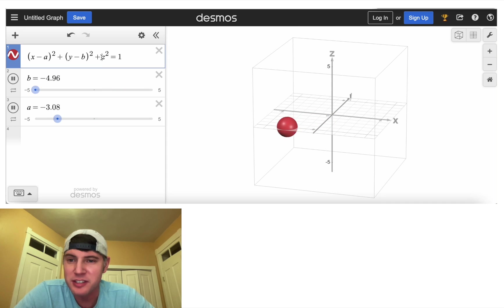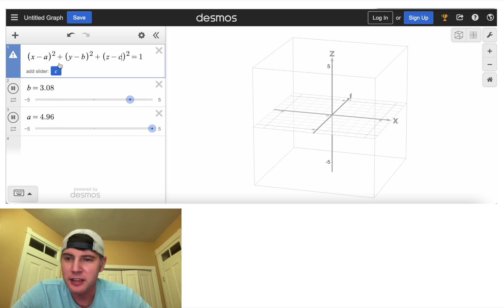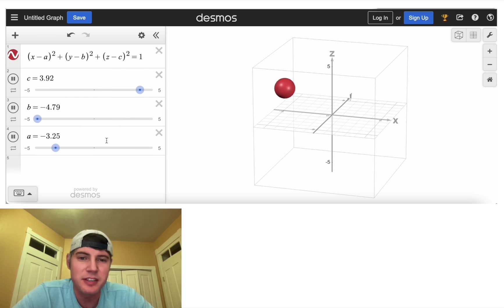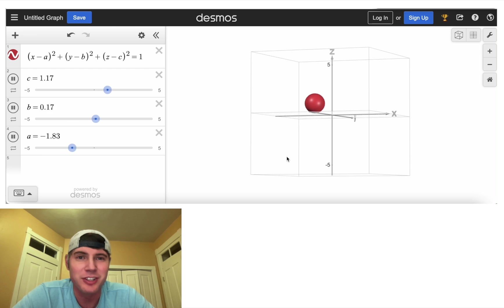If we want to increase the Z value, we just stick in here minus c and then give it a slider. And now we have A, B, and C. And now it's just bouncing off all the walls of the cube.